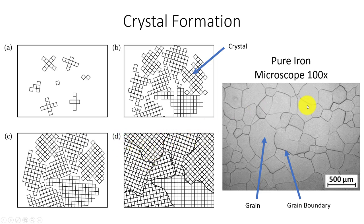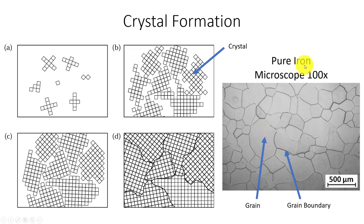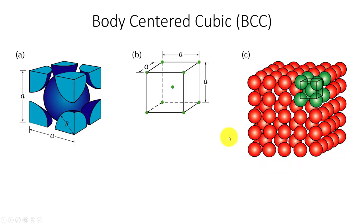If I take pure iron with no carbon and cut it, make a sample, polish it, etch it, I could look at the structures and see nice white areas here. That's going to be a grain of ferrite, which is basically my iron. I can see the amorphous areas — that intersection of the grain areas — because the grain itself is crystalline and that's going to eat at the grain boundaries. If I get the right etching, I can see the grains. That is how we see our crystal formation.